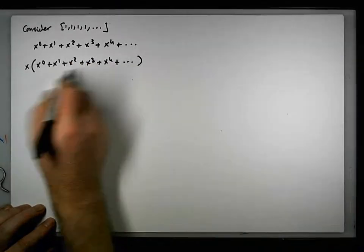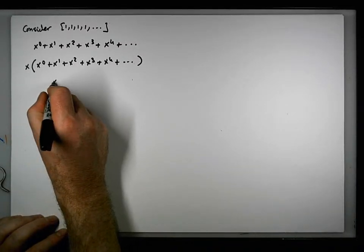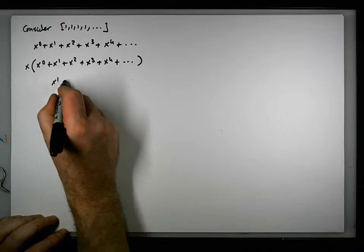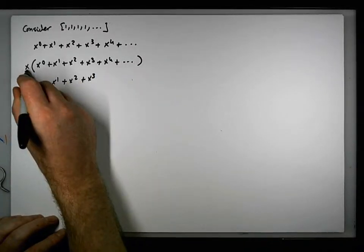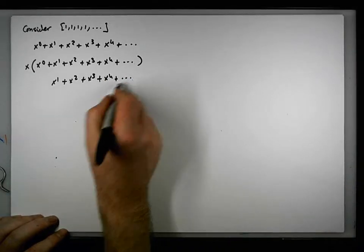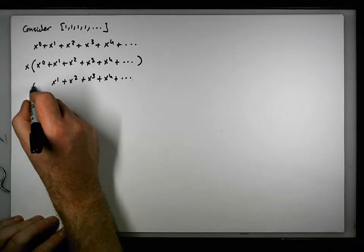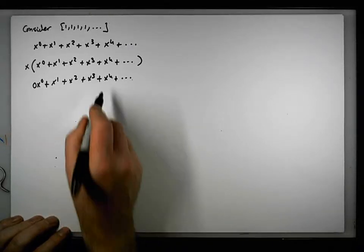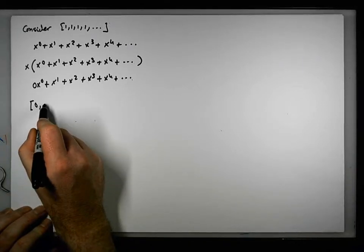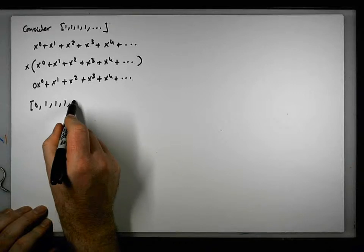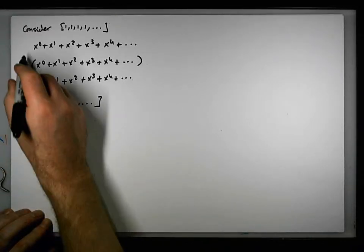Let's multiply by x. x times x to the zero becomes x to the one, x times x to the one becomes x squared, x times x squared becomes x cubed, x times x cubed becomes x to the four. So the effect is to lose the first term, which we could encode as zero x to the zeros — there are none of them. So multiplying by x effectively introduces a zero at the start.